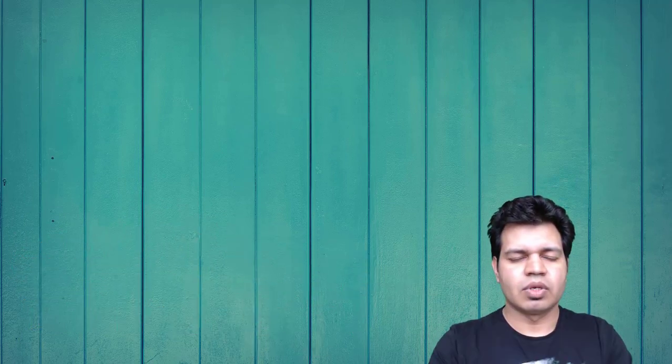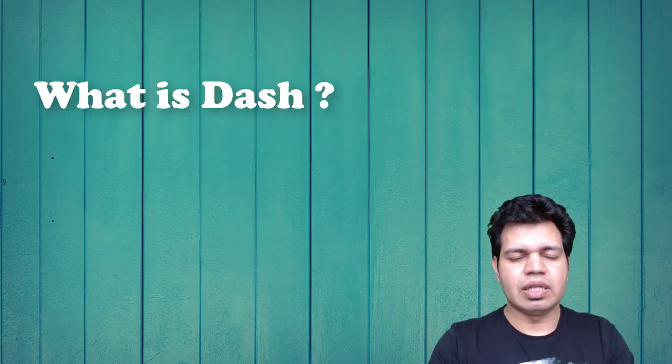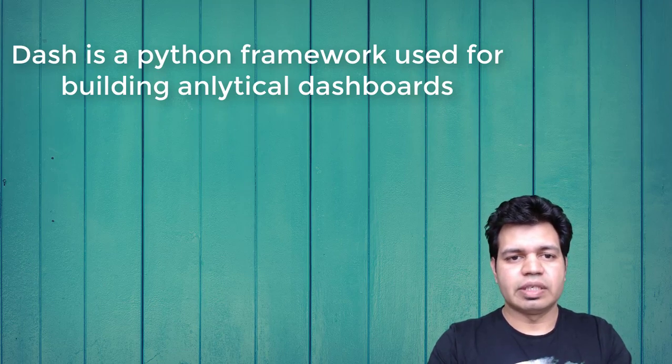What is Dash? Dash is a Python framework used to build analytical dashboards or web applications. One good thing is that you do not need to know JavaScript for building these applications. You can use various HTML elements like dropdowns, checkboxes, or text boxes to change graph visualizations and control other aspects of the charts. The code for Dash is declarative and reactive in nature, making it easier to build complex apps containing interactive elements.